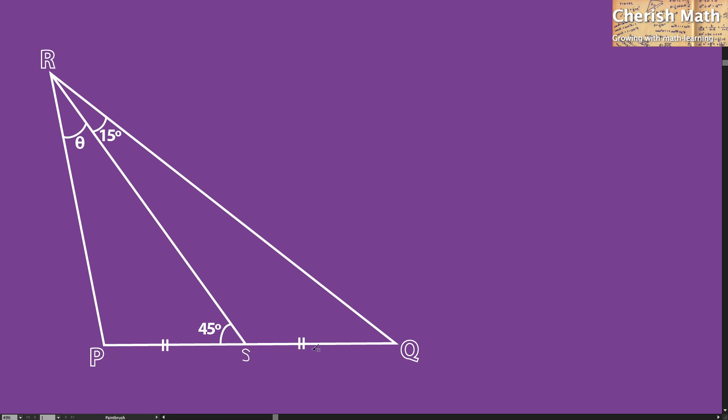Since PS and SQ are the same length, if this part is X, then SQ is X as well. For the entire length of PQ, that would be X plus X, which is 2X.